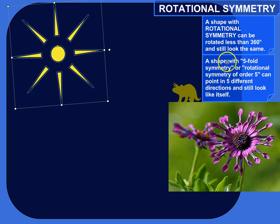And when we talk about symmetry, we could say a shape has five-fold symmetry, or a rotational symmetry of order five. And what that means is it can point in five different directions and still look exactly like it did before you did the rotations.